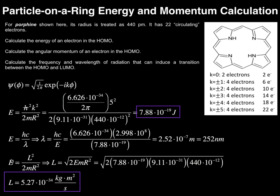Let's calculate the angular momentum of this electron using the energy we calculated. The energy equals the angular momentum squared divided by 2mr squared. Solving for angular momentum L, we get L equals the square root of 2Emr squared. Plugging in: square root of 2 times the energy 7.88 times 10 to the minus 19, times mass of electron 9.11 times 10 to the minus 31, times radius 440 times 10 to the minus 12 squared. Taking that square root gives the angular momentum of 5.27 times 10 to the minus 34 kilogram meter squared per second.